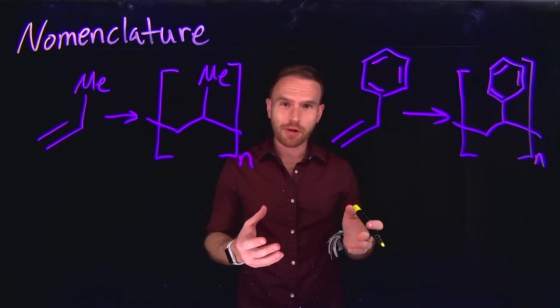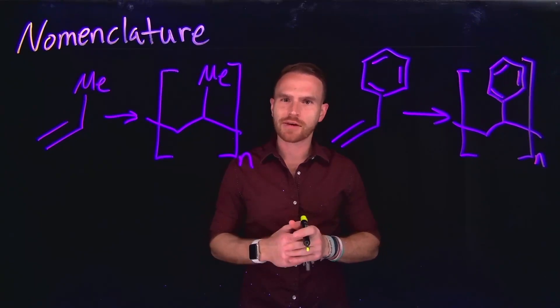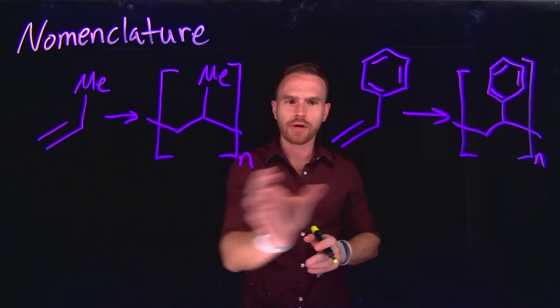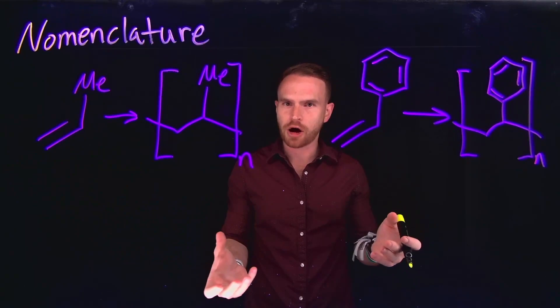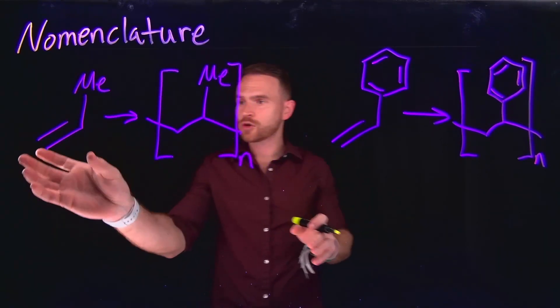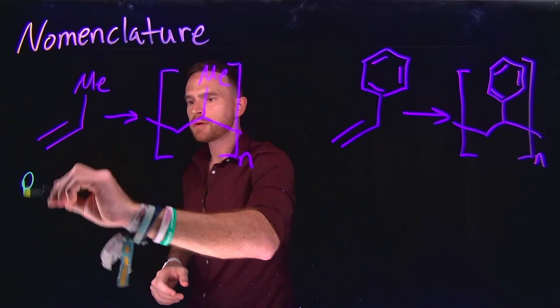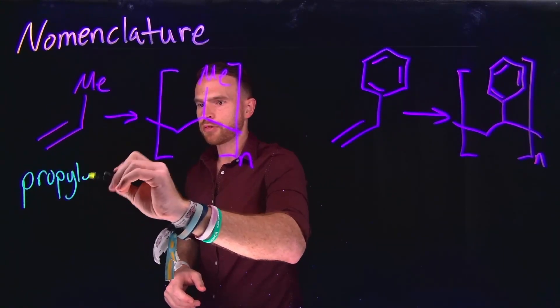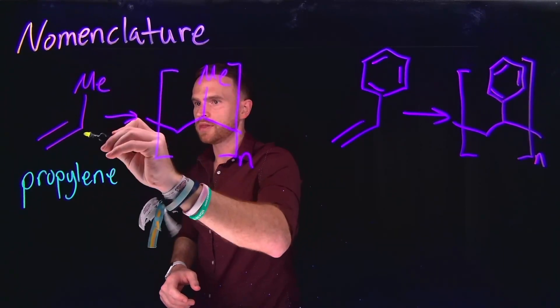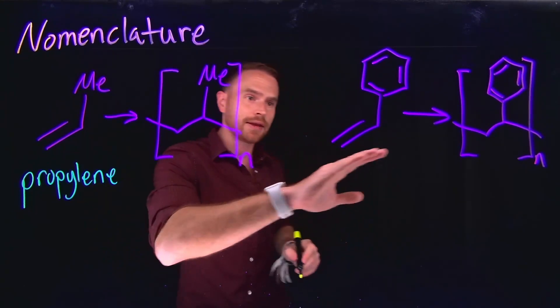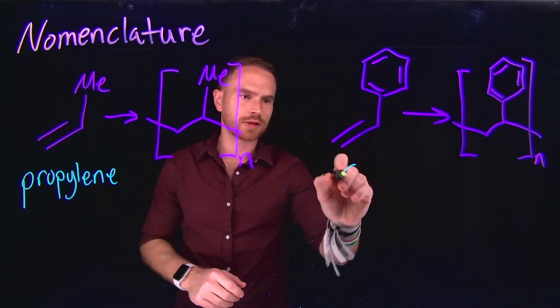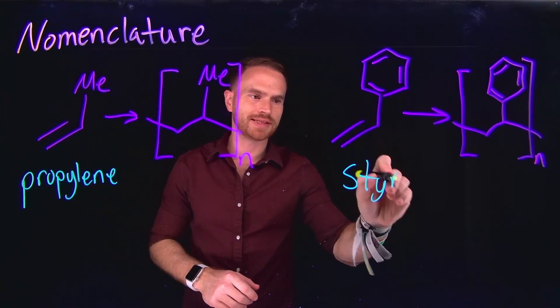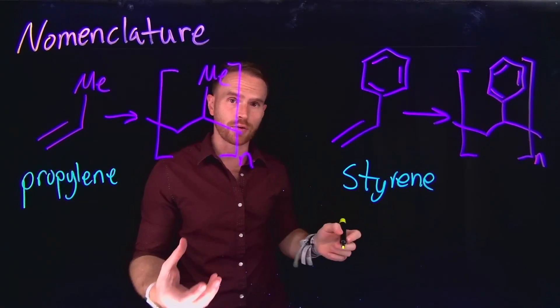The nomenclature of synthetic polymers often follows a specific set of rules depending on the structure of the monomers that build up those polymers. For example, on the screen we see that we have a propylene group, which is because there are three different carbon atoms on this chain and there's an alkene. And this functional group is called a styrene. So this is a benzene derivative known as styrene.